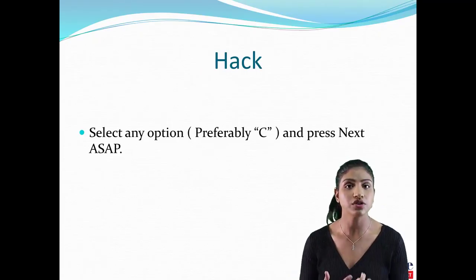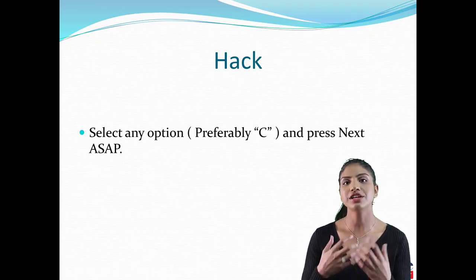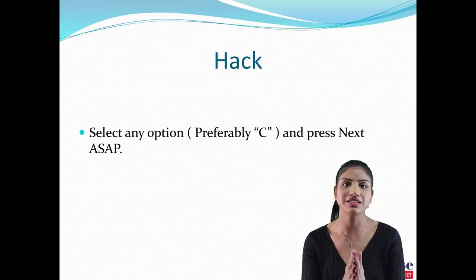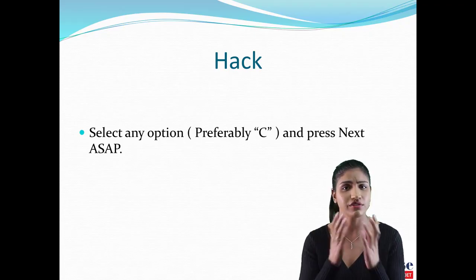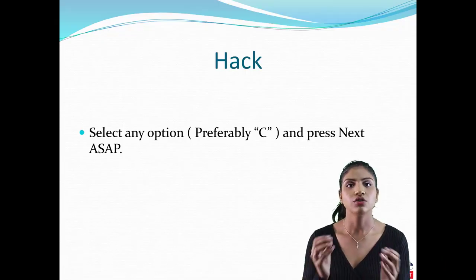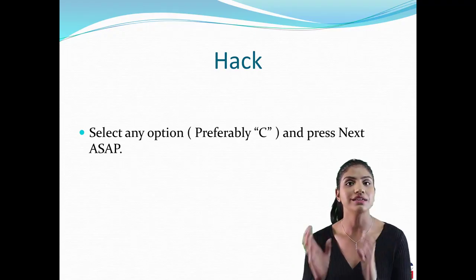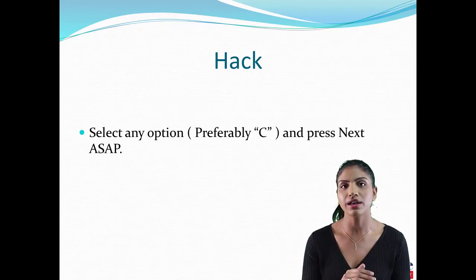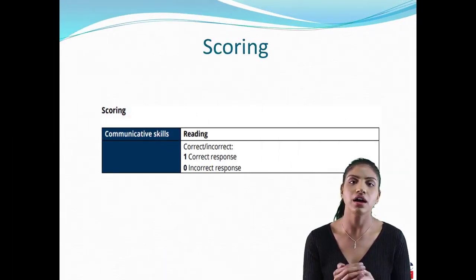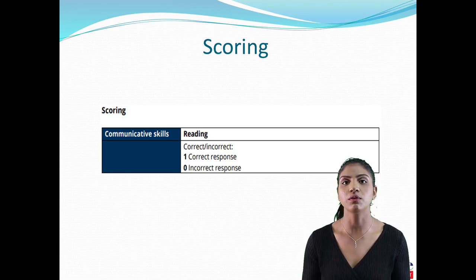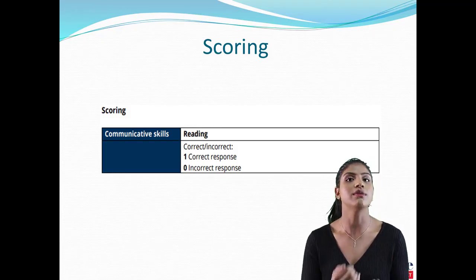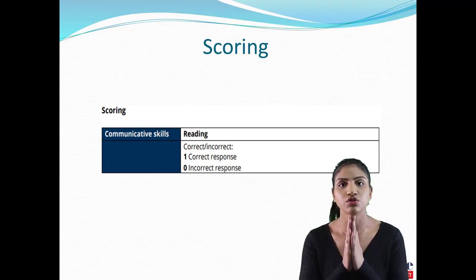I suggest option C because in the PTE exam, option C has the highest probability of being correct. If it's your lucky day, all your C answers will be correct. Regarding scoring: one point for the correct answer, zero for the wrong answer, and there is no negative marking. So if C is wrong, you simply get zero — you lose nothing. That is all about multiple choice single answer.